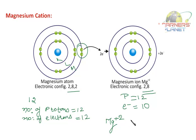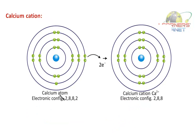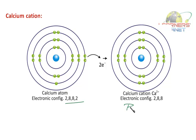Let's take the example of calcium. Its electronic configuration is 2, 8, 8, 2. Calcium can also lose two electrons and form the calcium cation (Ca2+). In this calcium cation, the number of protons is 20 and the number of electrons is 18. This is the way cations are formed.